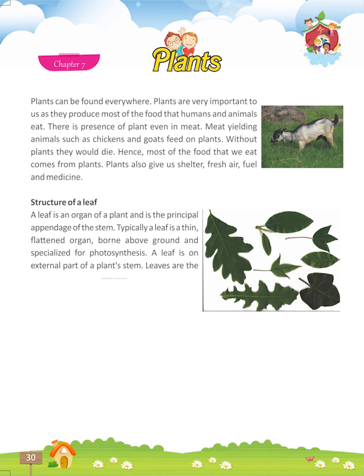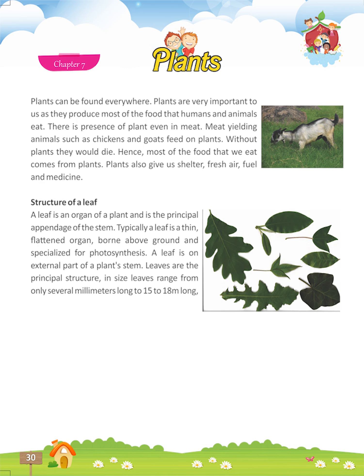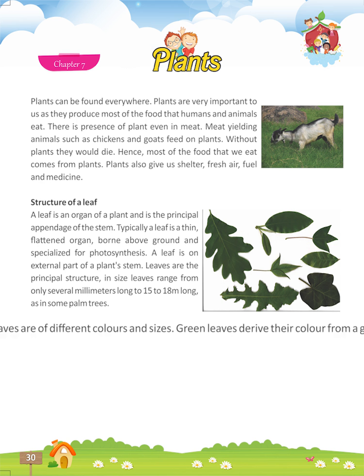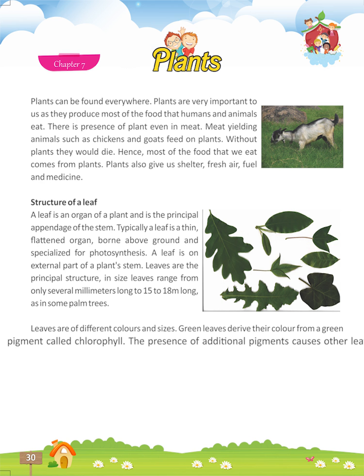Leaves are the principal structure. In size, leaves range from only several millimeters long to 15 to 18 meters long, as in some palm trees. Leaves are of different colors and sizes. Green leaves derive their color from a green pigment called chlorophyll. The presence of additional pigments causes other leaf colors, such as red in coleus and purple in cabbage.